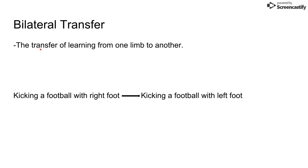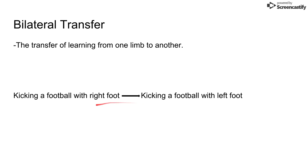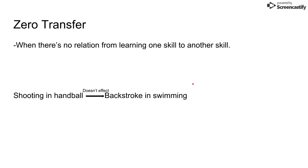Next is bilateral transfer, which is the transfer of learning from one limb to another. For example, if you kick a ball with your right foot and then go to kick with your left foot, even without any practice on the left foot you're going to be pretty decent, because your body naturally knows how to do it from your dominant foot — so you already have an idea of what you're doing with the other foot.